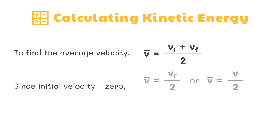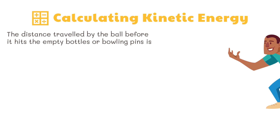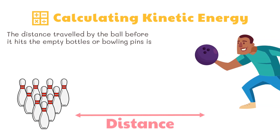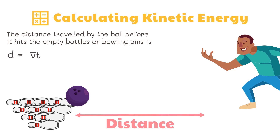Since the initial velocity is zero, the average velocity is final velocity divided by 2, or average velocity equals velocity divided by 2. The distance traveled by the ball before it hits the empty plastic bottles or bowling pins is given by the equation: displacement equals average velocity times time. Since average velocity equals velocity divided by 2, we multiply that by time.